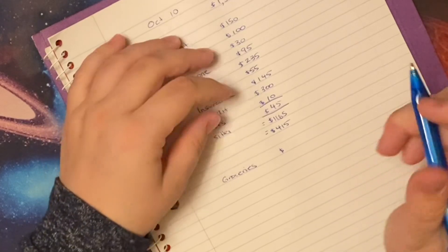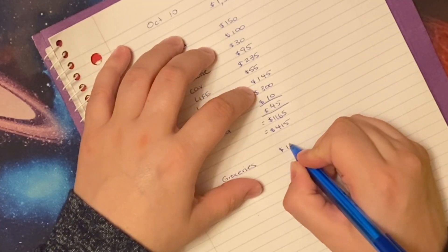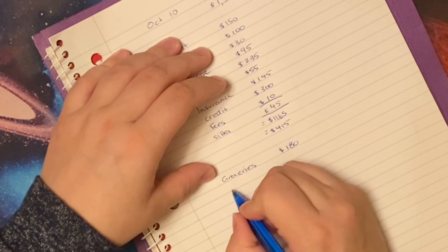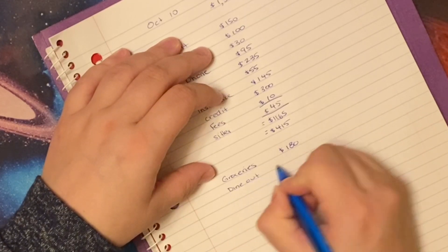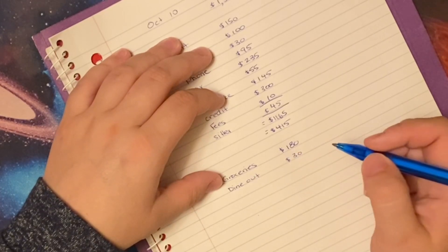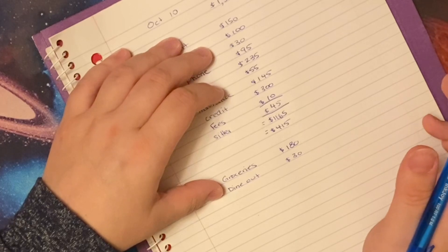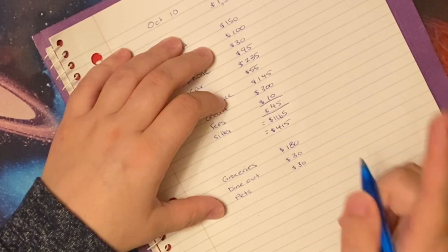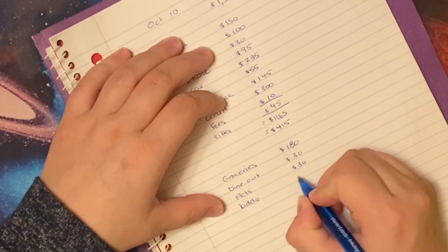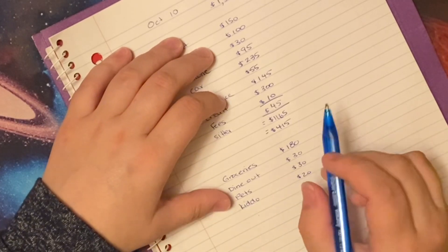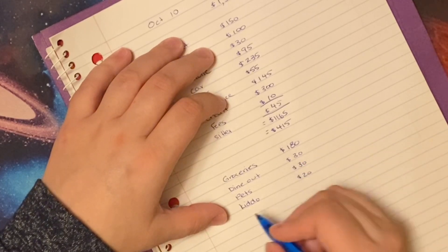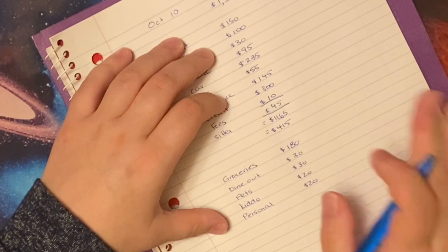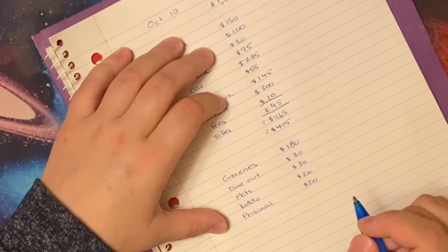I was gonna do $150, so I'm gonna do $180 for groceries. Dine out, I'm going to budget just $30 because it's Thanksgiving. I have no reason to be eating out. Pets, I'm going to budget $30. I think I only need dog food. Kiddo, I'm gonna be budgeting the regular $20 because hockey cards just started and he's already going crazy for them.